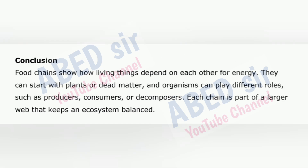Conclusion: Food chains show how living things depend on each other for energy. They can start with plants or dead matter, and organisms can play different roles such as producers, consumers, or decomposers. Each chain is part of a larger web that keeps an ecosystem balanced.